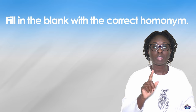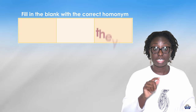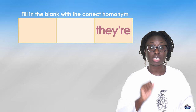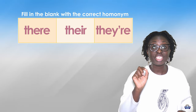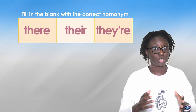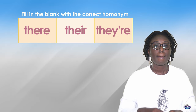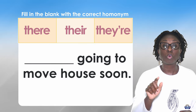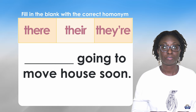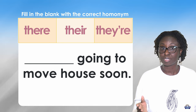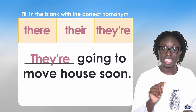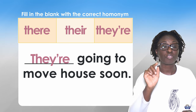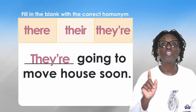Now let's practice. Fill in the blank with the correct homonym: T-H-E-Y apostrophe R-E, T-H-E-R-E, or T-H-E-I-R. First: blank going to move house soon. Which one do you think? Yes — T-H-E-Y apostrophe R-E. They're going to move house soon.